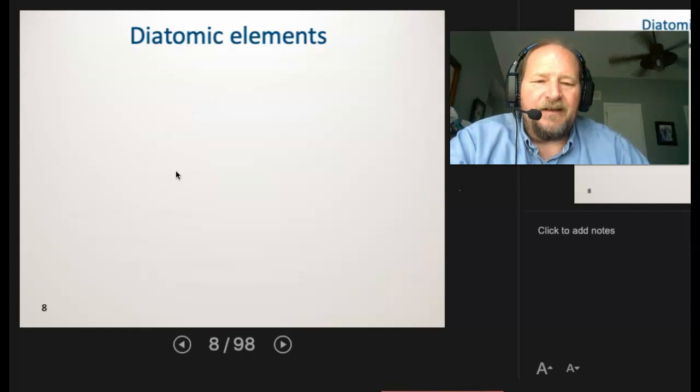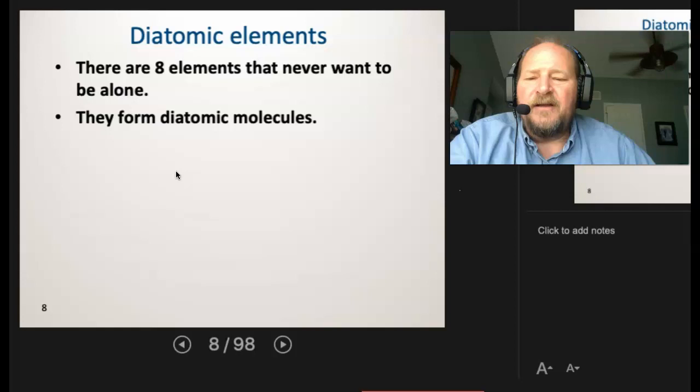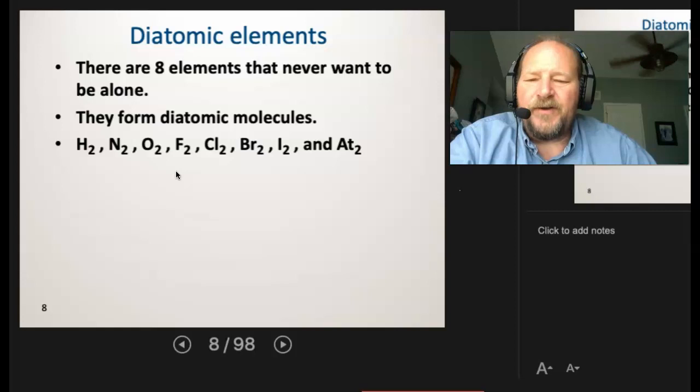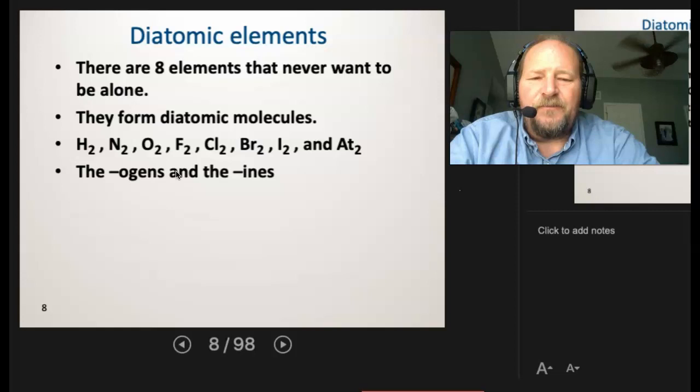Now, before we go further looking at reactions, there's another topic we need to hit, and that's going to be diatomic elements. Diatomic elements, unfortunately, you're going to have to commit to memory. There's just no other way to get around it. Now, for diatomics, what we're saying is there are eight elements that never want to be alone. And so they're going to form diatomic molecules. Those elements are going to be hydrogen, nitrogen, oxygen, fluorine, chlorine, bromine, iodine, and astatine. Basically, it's all the ogens and all the enes.